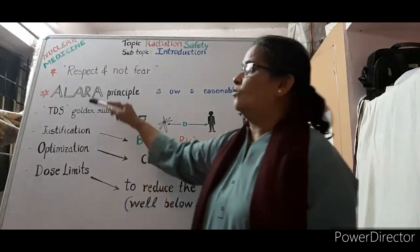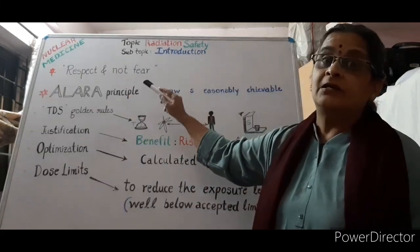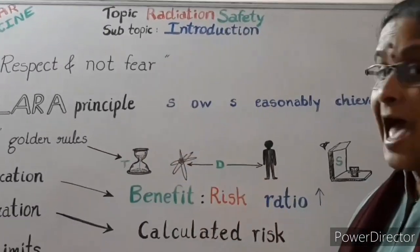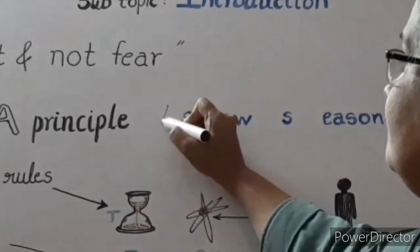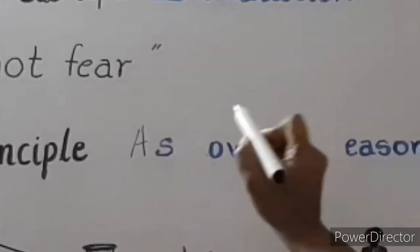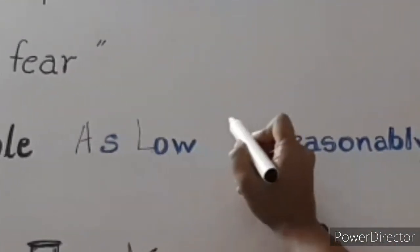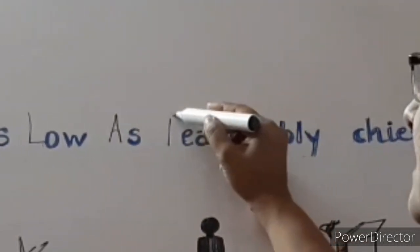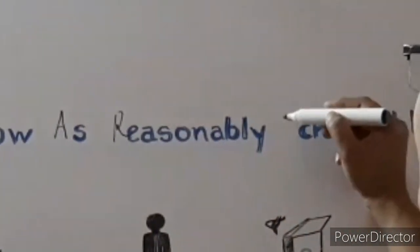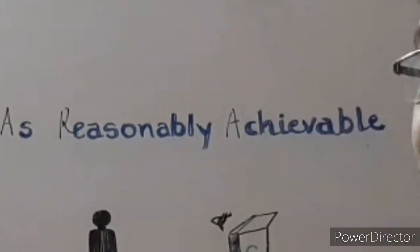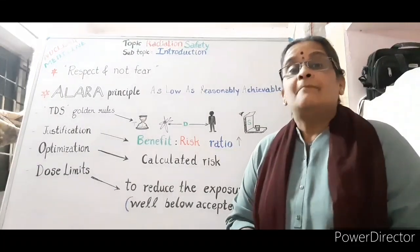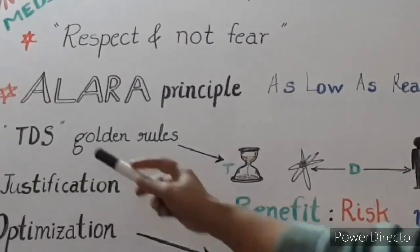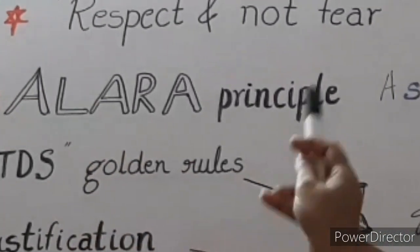I had talked about the principle of ALARA — As Low As Reasonably Achievable — meaning practically or reasonably achievable. This translates into the TDS golden rules.